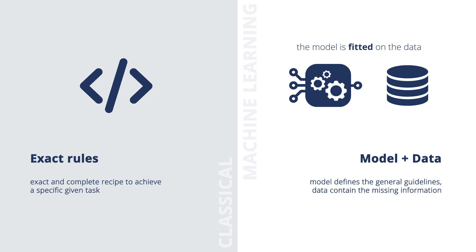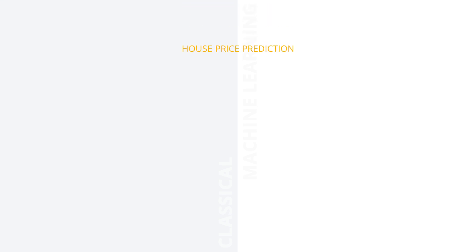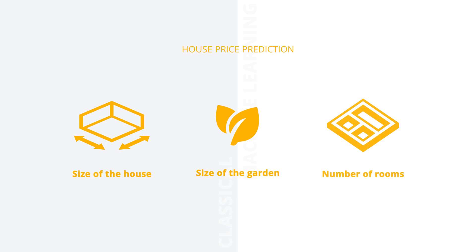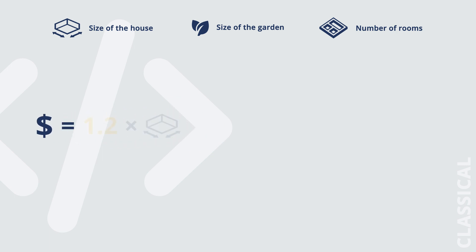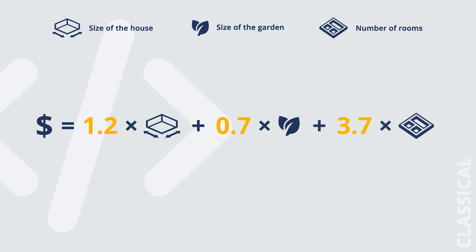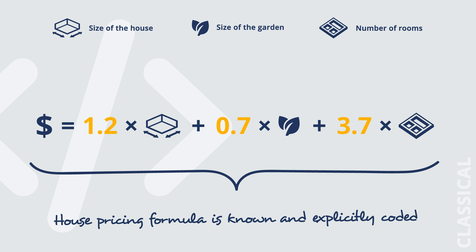Let's illustrate this with a simple example. Say we want to predict the price of a house based on the size of the house, the size of its garden, and the number of rooms it has. We could try to build a classical algorithm that takes these three house features and returns the predicted price based on an explicit rule. In this example, the exact house pricing formula has to be known and coded explicitly — but in practice, this formula is often not known.